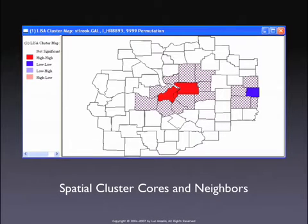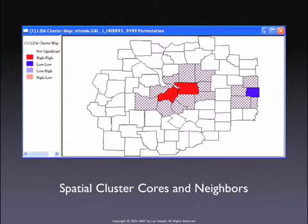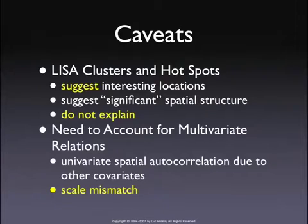This is where we get into the gray zone between pure exploratory analysis and actual significance testing. Purists of EDA do not include hypothesis tests — the whole point of EDA is to generate hypotheses. Here, we're actually carrying out tests for local spatial autocorrelations, so in some sense it's already beyond EDA. But it is not modeling. This is just pattern recognition — it finds patterns in the data, and then the next step is to figure out why these patterns occur.